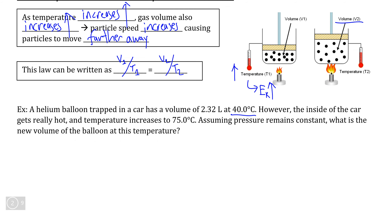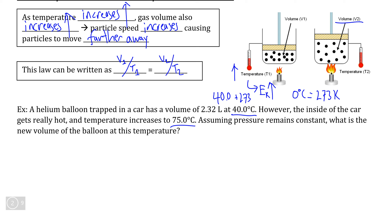The first thing to note is that our temperatures are listed in Celsius, which is a problem because gas calculations involving temperature require us to convert to Kelvin. Since zero degrees Celsius equals 273 Kelvin, we simply add 273 to convert. So 40.0°C becomes 313 K, and 75°C becomes 348 K.